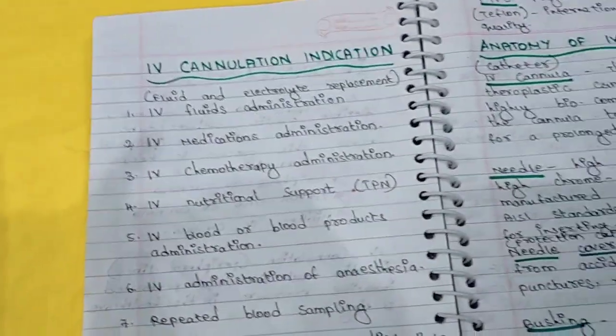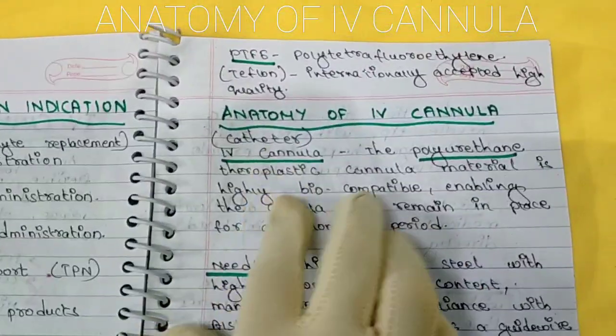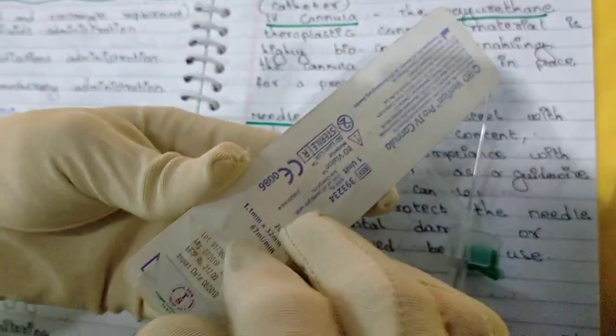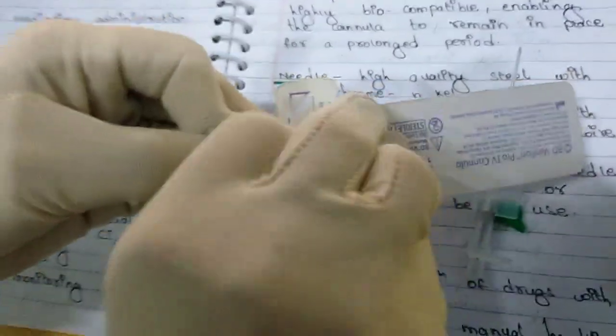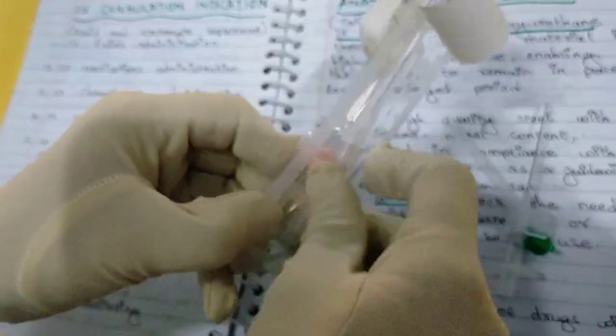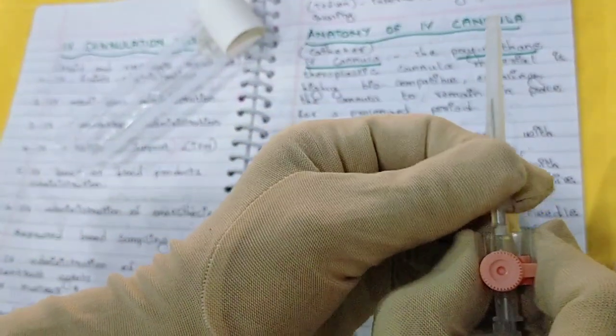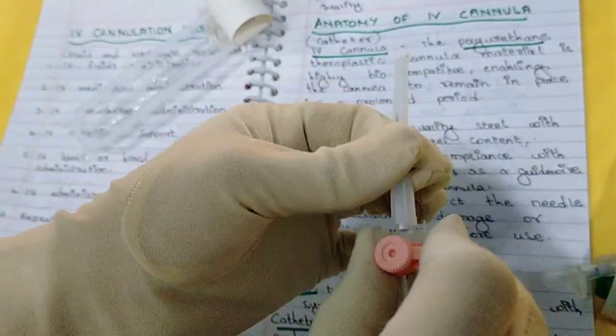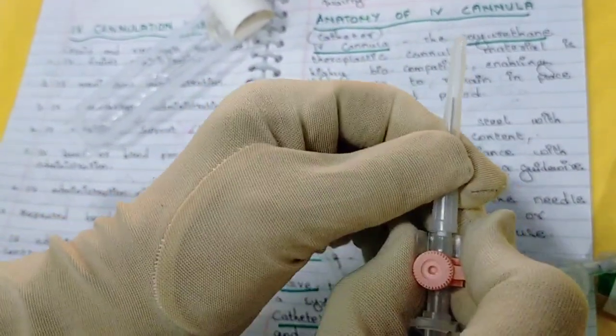Now coming to the anatomy of IV cannula. Just as we study the anatomy of different body organs, we need to know the anatomy of IV cannula to understand and deal with it better. Now let me open this — this is an IV cannula. When you open an IV cannula, the first thing is this protection cover or protection cap, also called the needle cover. This protects against accidental damage to the needle or accidental puncture, and it is removed just before use. So whenever we are going to use this cannula, we first remove this needle cap.